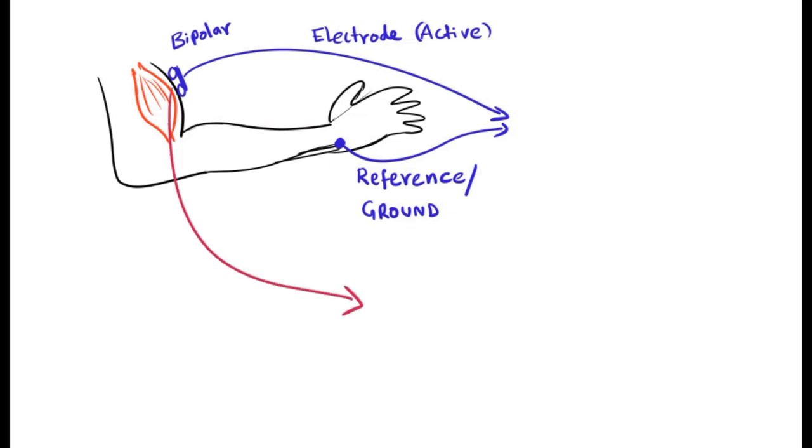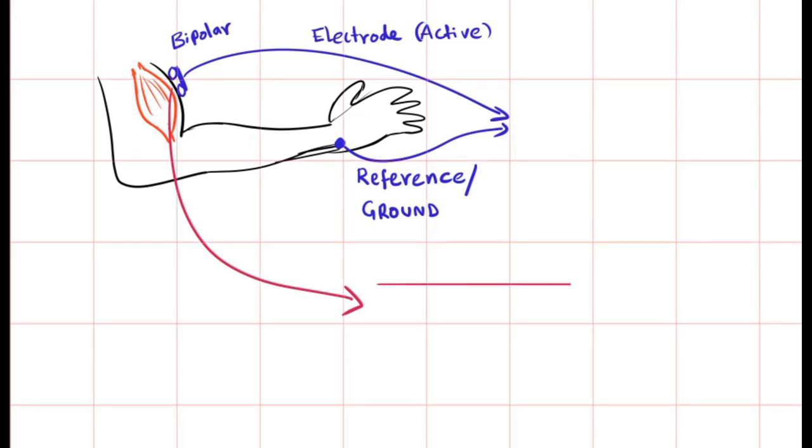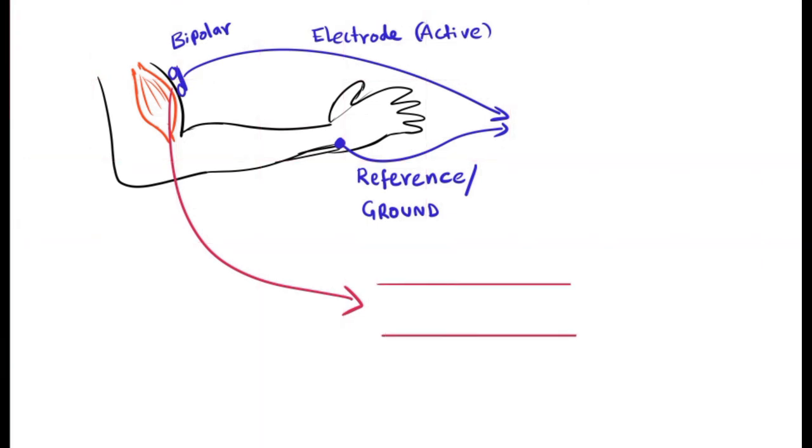These are bipolar electrodes that pick up the signals of action potentials when they pass from A to B. These two electrodes are placed over one muscle fiber, a representation of one muscle fiber, where the initial electrode A gets activated when depolarization touches it.